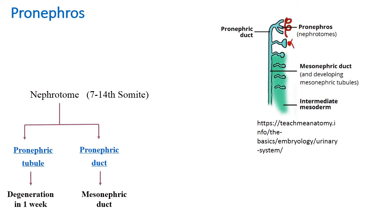Pronephros consists of two parts of the nephrotome: pronephric tubules and pronephric ducts. The nephrotome contains from 7 to 15 somites. Pronephric tubules degenerate in one week, but pronephric ducts are retained as mesonephric ducts.